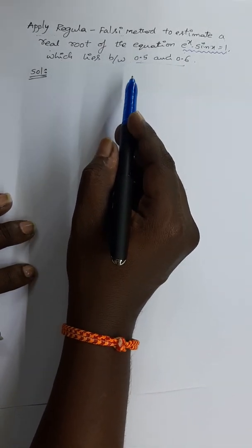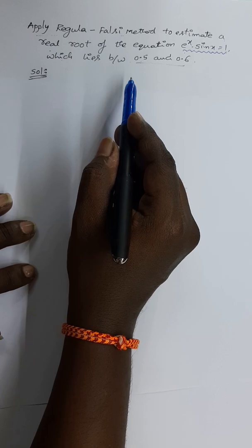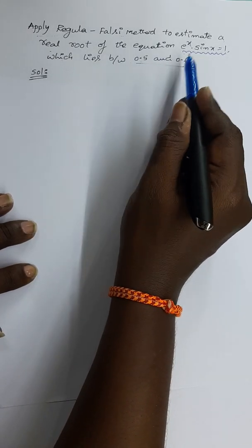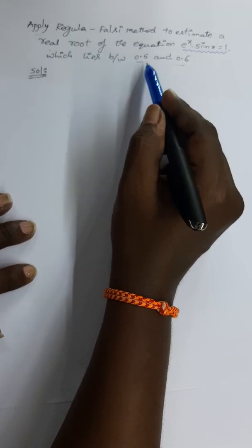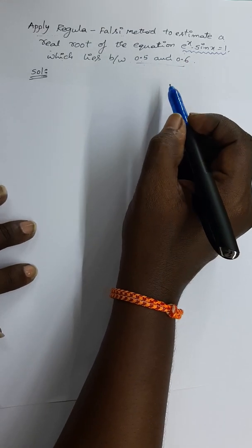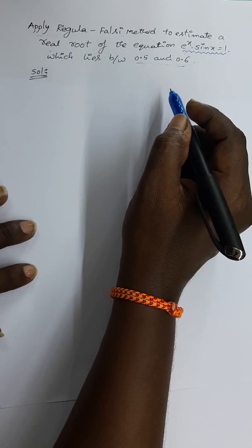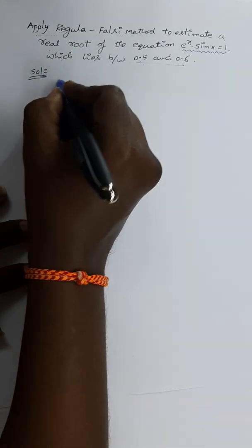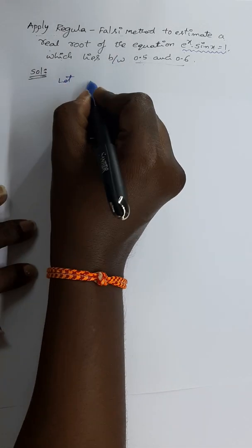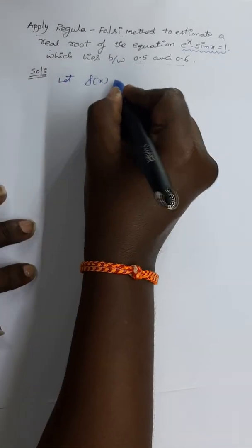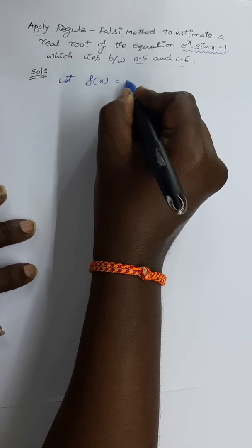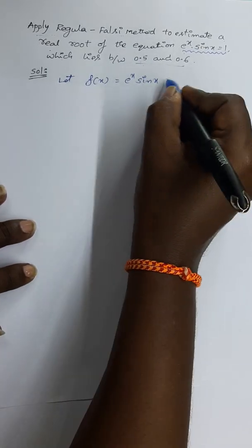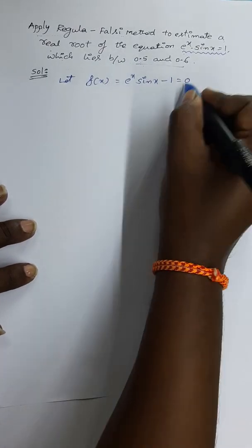Here in this problem, the initial approximations of the required root are directly provided, which are 0.5 and 0.6. So it is not necessary to investigate again. As usual, let us denote the given equation as f(x), where f(x) = e^x · sin(x) − 1 = 0.